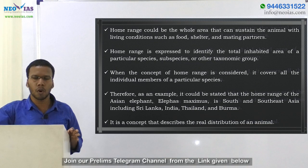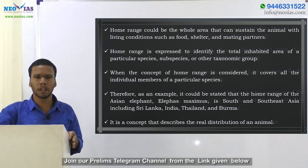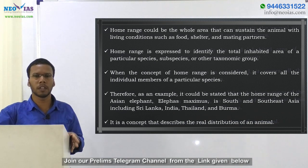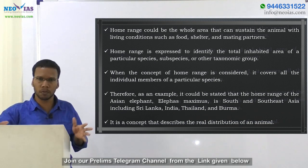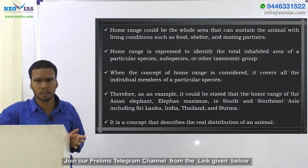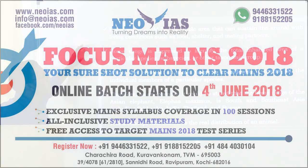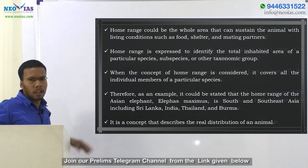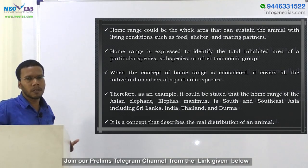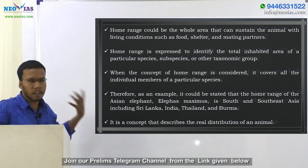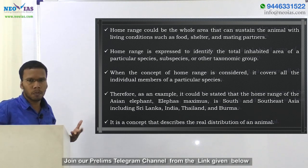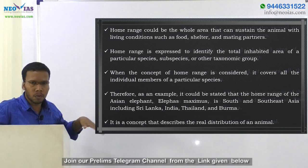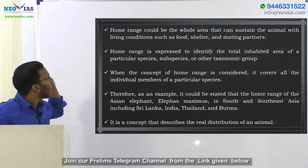Regarding home range, we know that home range is the area which a living organism utilizes for their survival — whatever region they are utilizing is known as home range. So home range could be the whole area that can sustain the animal with living conditions such as food, shelter, and mating partners. In order to survive, get food, get shelter, and reproduce — whatever region they are using — that is known as home range.